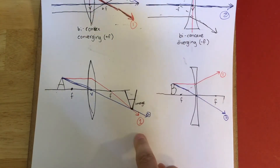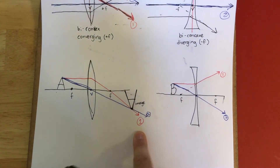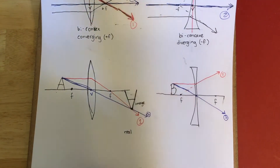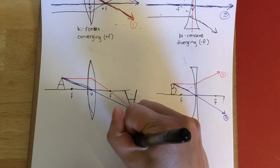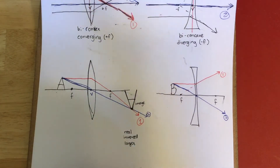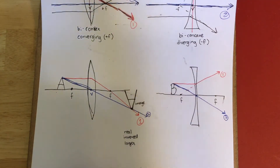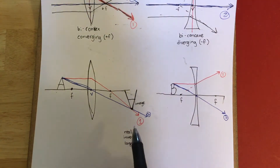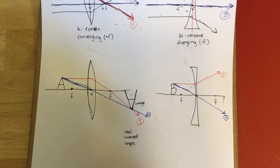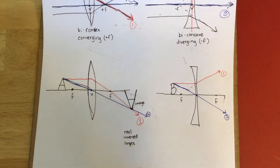The image formed by the intersection of these two rays is real, inverted, and larger. It's real because the blue and red rays literally intersect each other. It's inverted because the image is upside down from the original. And it is most definitely larger. You should be able to draw and interpret this ray diagram for a converging lens.